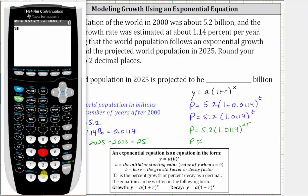We enter 5.2, open parenthesis, 1.0114, closed parenthesis, raised to the power of 25, and enter. Notice how we have a three in the third decimal place, which means you round down to 6.90.